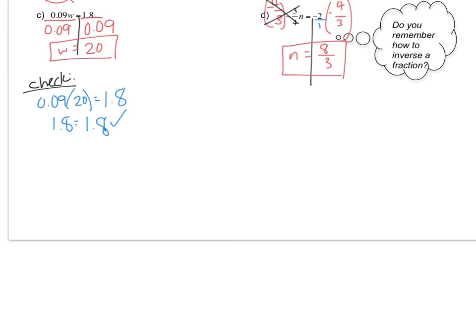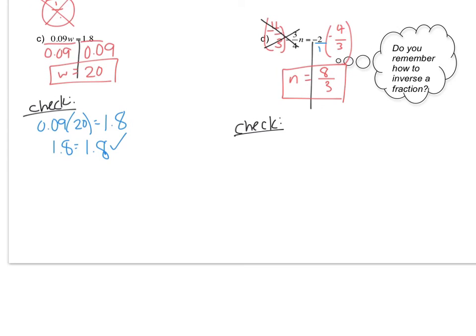Now you might be freaking out because it's a fraction answer. So we're going to plug it in and check. That's how you know that you got it right. I'm going to rewrite the original equation, negative 3 fourths, and I'll use the dot just to spice things up a little. I know you know the dot also means multiplication.